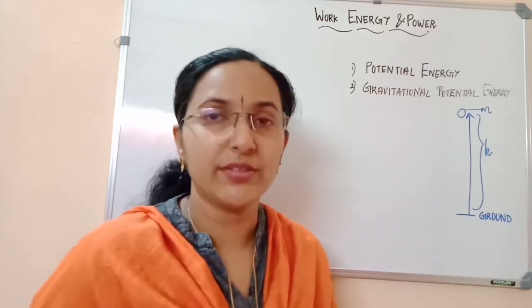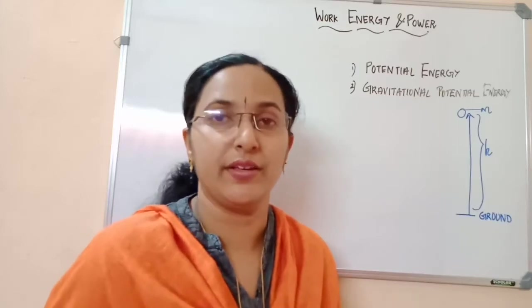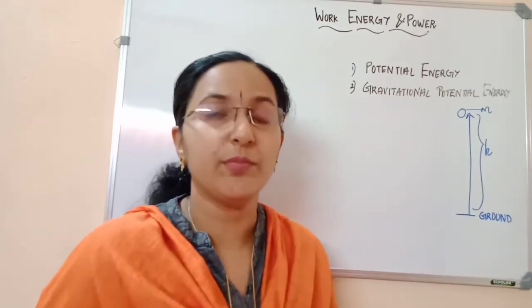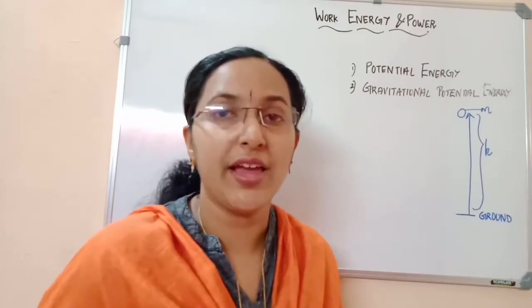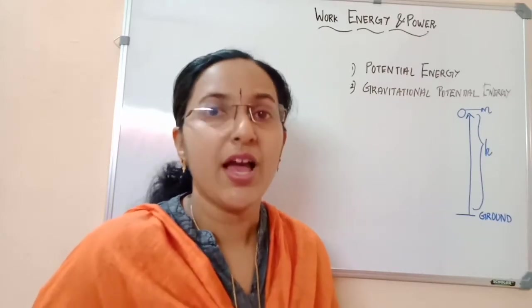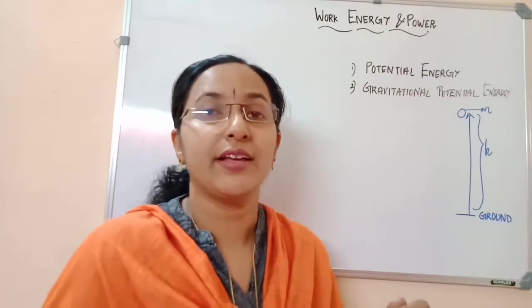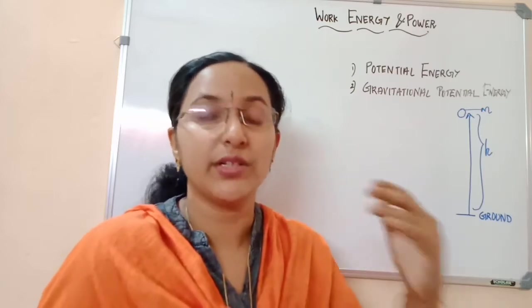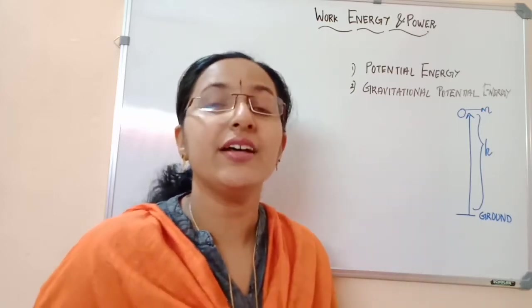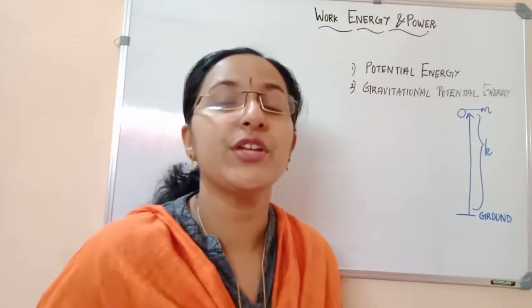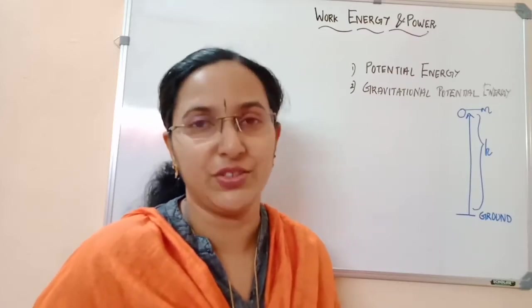Bow and arrow: in case of the bow and arrow, how does the arrow go? We are stretching the bow and it is gaining potential energy. While we are releasing the arrow, that gained potential energy is converted to kinetic energy. That is, energy gained due to the position of an object is known as potential energy.